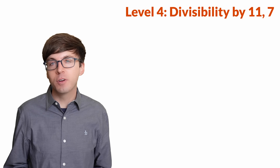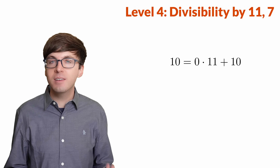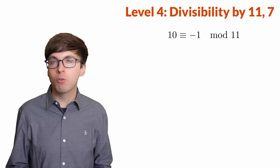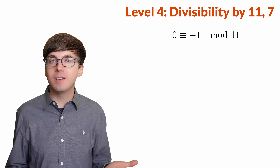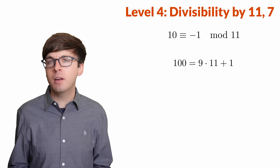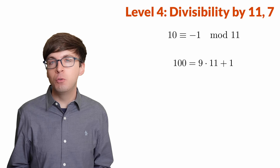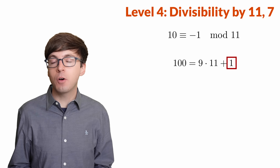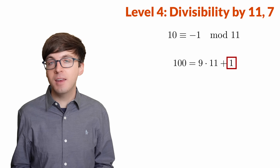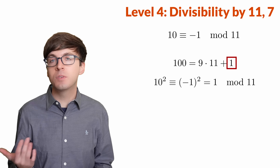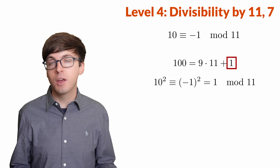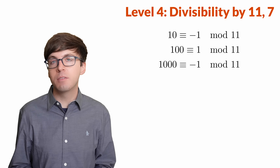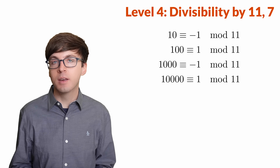For level 4, let's look at the trickier ones: 11 and 7. If we divide 10 by 11, we get a remainder of 10 — another way to think of this is that we're 1 short of a multiple of 11, so 10 is congruent to negative 1 modulo 11. What about 100? 99 is a multiple of 11, and then we have a remainder of 1. We can also see this from the modular arithmetic: 10 is congruent to negative 1 mod 11, so 10 squared is congruent to negative 1 squared, which is 1. This pattern continues: 1,000 will be congruent to negative 1 mod 11, and 10,000 will be congruent to positive 1, and so on.